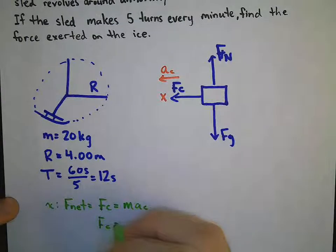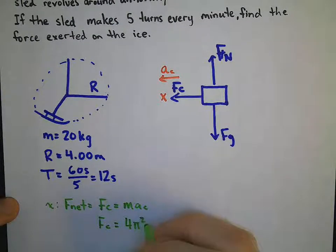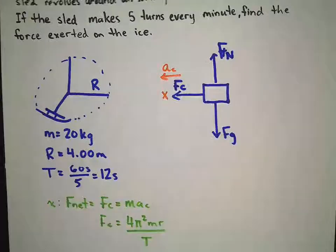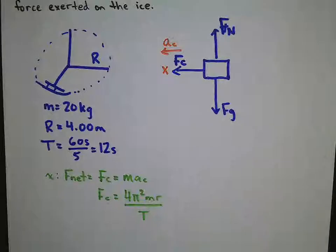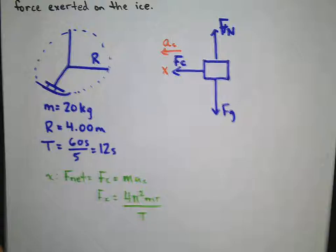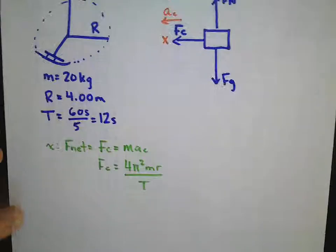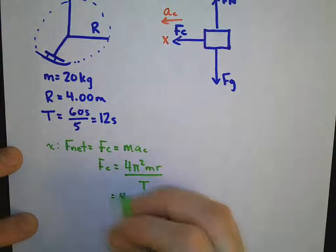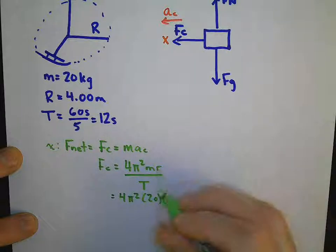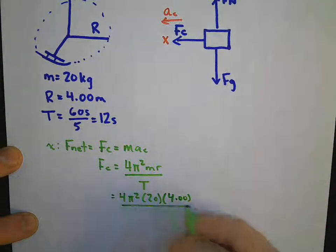So therefore, Fc is 4 pi squared mr all over t squared. I knew to choose this equation for centripetal acceleration due to the fact that I have my period, my radius, and my mass. I can make all of those substitutions into the equation. So 4 pi squared, 20, and my radius in this case was 4.00, and that's all divided by 12 squared.